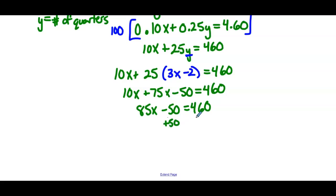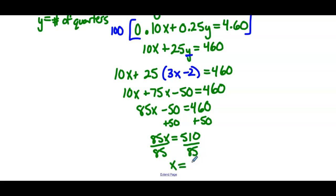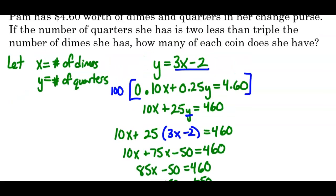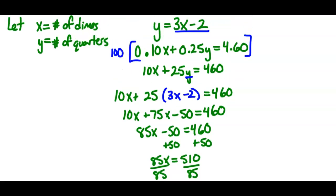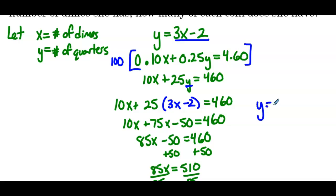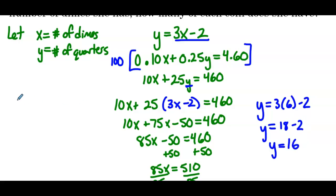So 85x minus 50 equals 460. Add 50 to both sides: 85x equals 510. Divide both sides by 85 and we have x equals 6. So if x equals 6, we need to find the number of quarters: y equals 3x minus 2, so y equals 3 times 6 minus 2, which is 18 minus 2, so y equals 16. She has 6 dimes and 16 quarters.